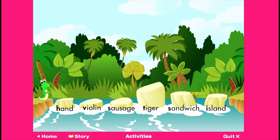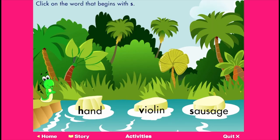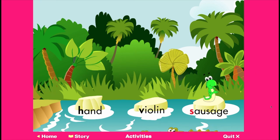Help Lettergetter get to the other side. Click on the word that begins with S. Very good — sausage begins with S.